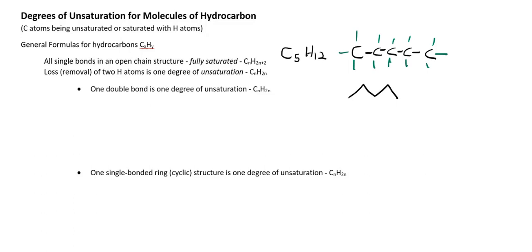Next, I'm going to draw an unsaturated hydrocarbon molecule where there's 1 degree of unsaturation. We can talk about unsaturation in terms of degrees of unsaturation. One degree of unsaturation is where we lose or remove 2 hydrogen atoms. So for every pair of hydrogen atoms that are removed or lost, we say 1 degree of unsaturation has been added to what would have been the original fully saturated hydrocarbon. In this example, I'm going to remove 2 hydrogens, making the formula C5H10 — we no longer have that plus 2.